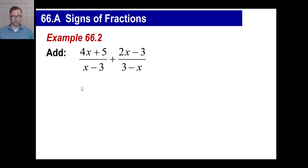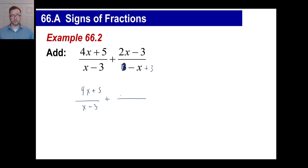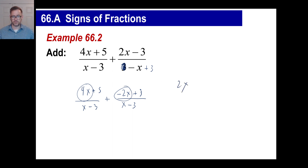Here's another one. Four x plus five over x minus three, and you probably saw that three minus x is the same as negative x plus three. If we change every single sign of every single term of this fraction, we get positive x and negative three. The numerator becomes negative two x plus three. Now combine like terms: four x minus two x gives two x, and five plus three is eight, all over x minus three. Boom, done.